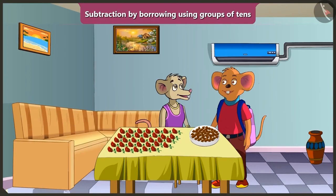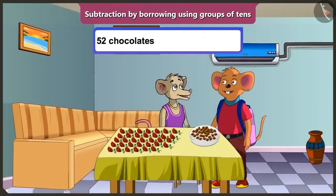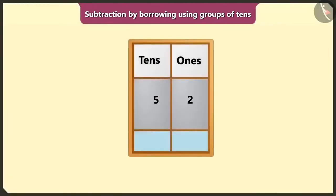Your house is very beautiful. Thank you, Chuchu. Would you like to eat chocolate? Yummy. We ate 18 chocolates out of 52. So now, how many chocolates are left? I don't know. Chichi, let's do subtraction after writing 52 and 18 in the box of ones and tens.